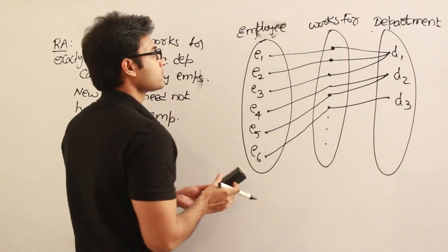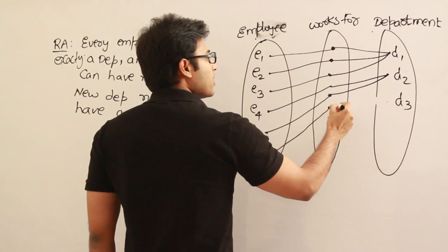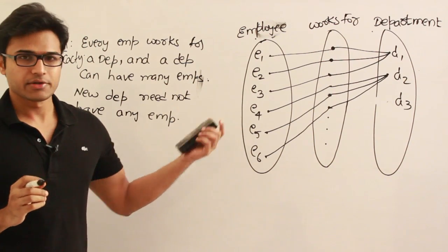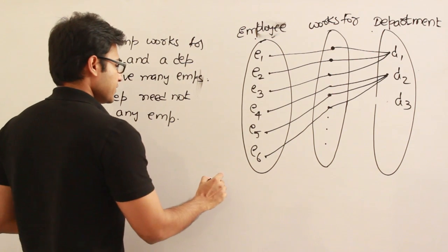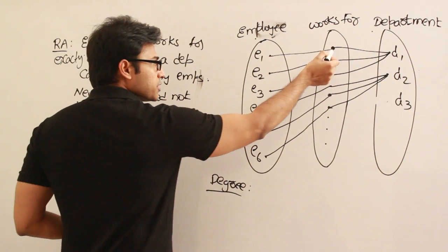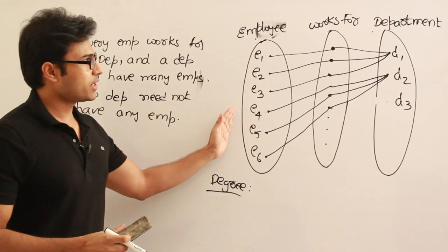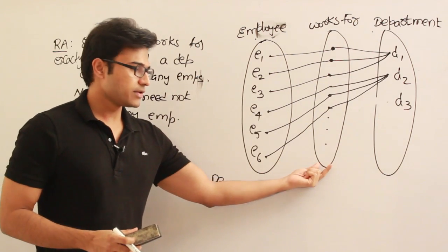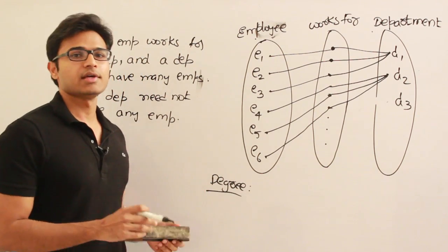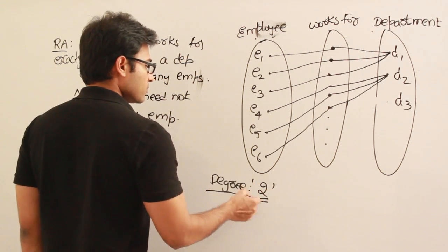Now let's talk about some characteristics of the relationship. The first characteristic is degree. Degree is simply how many entity sets are participating in a relationship. In this case, one entity set is employee and the other is department — two entities are participating. That is why this relationship is called a binary relationship, and the degree is two.